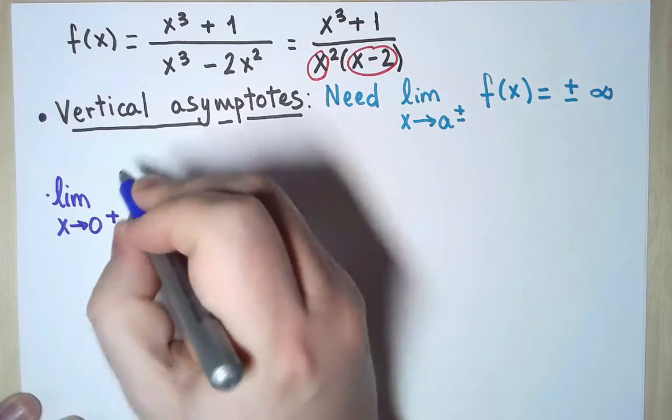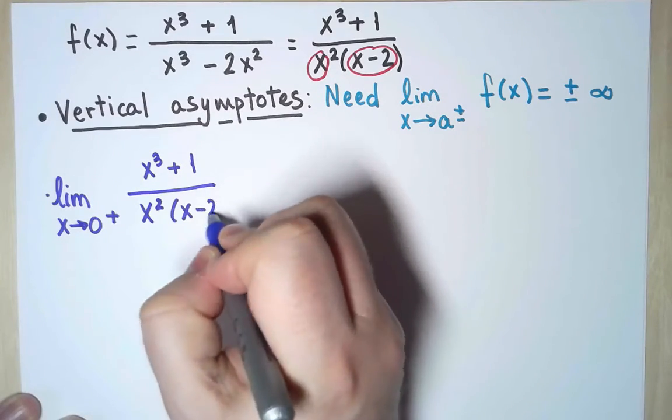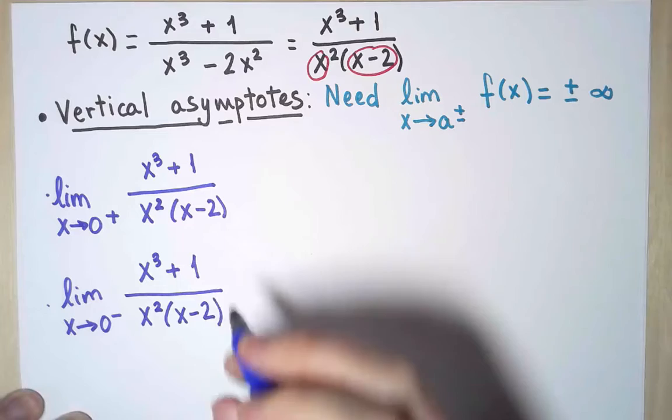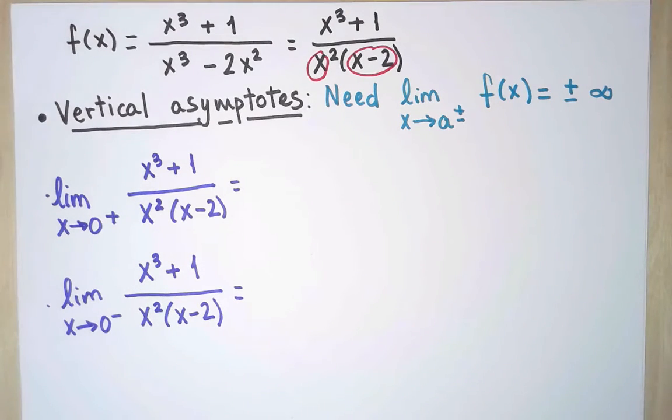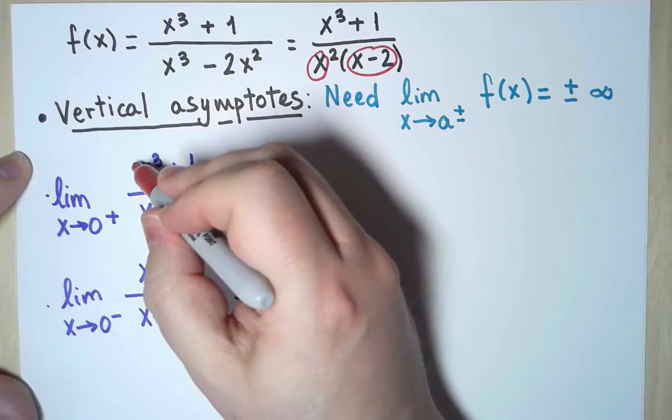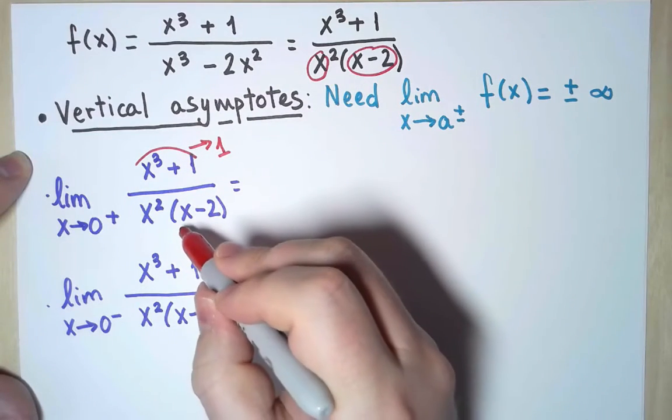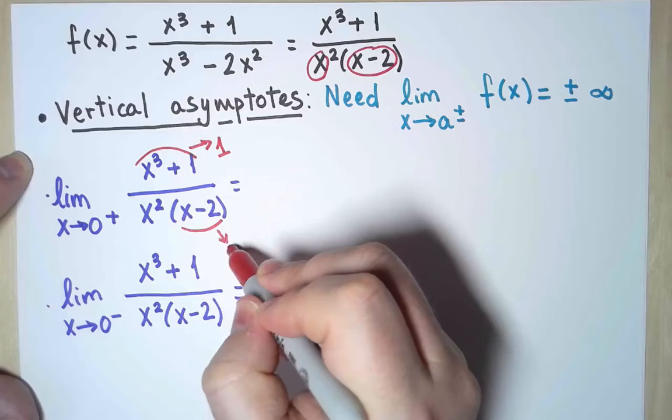First, I'm going to compute the limits as x approaches zero. I will compute the limit on the right and on the left, in case they have different values. I want to see whether these limits are plus or minus infinity, so the sign of the rest of the terms is going to matter. As x approaches zero, this numerator is going to one, and this denominator is going to minus two. So it stays negative.